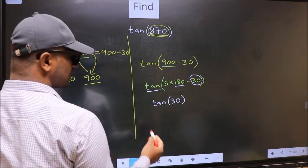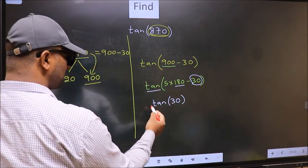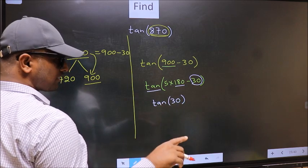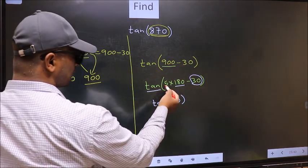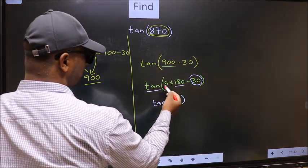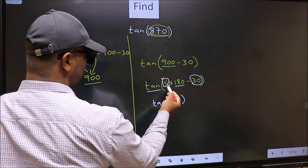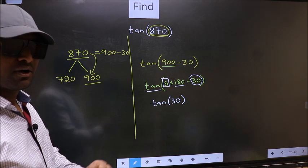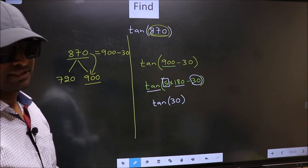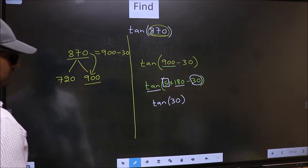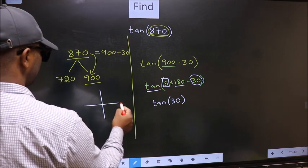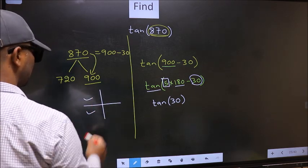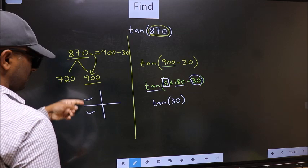Now the question is, will we get plus or minus? To answer that, we should look at the number before 180. That is 5, and 5 is odd. All the odd multiples of 180 lie in either the second or third quadrant.